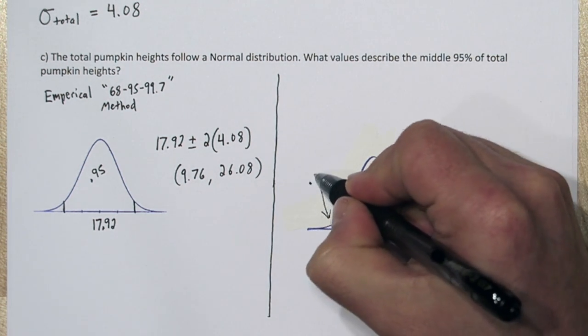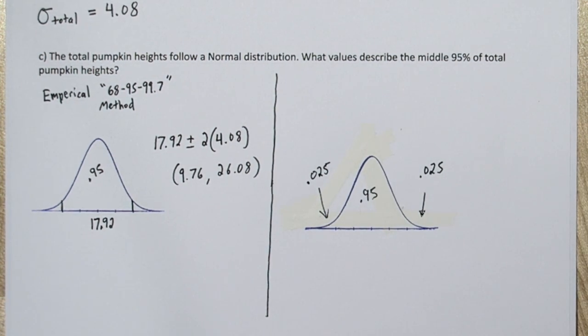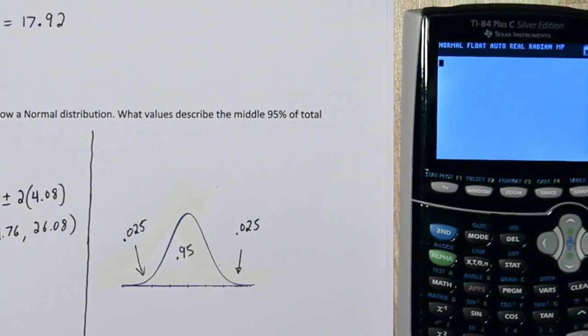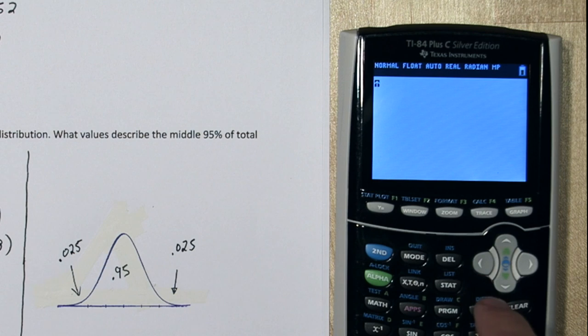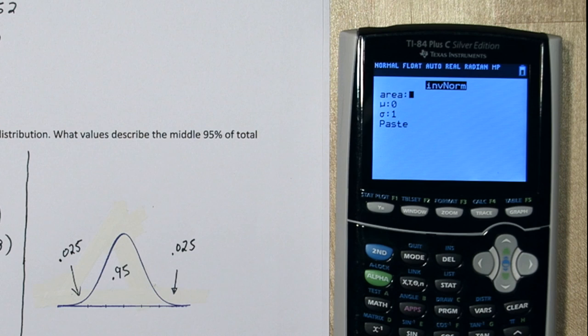So if the middle 95% is cut off, that means in each of these tails, we're going to have 2.5% of the area. So we can use a function on the calculator called inverse norm to find that cutoff. To access inverse norm, press second and vars. This is the distribution menu. And we're going to go down to inverse norm.